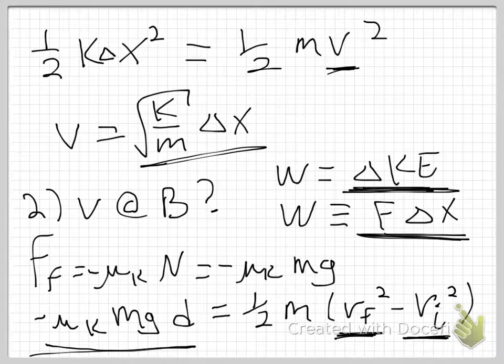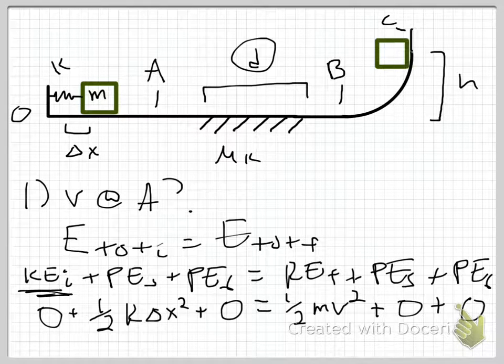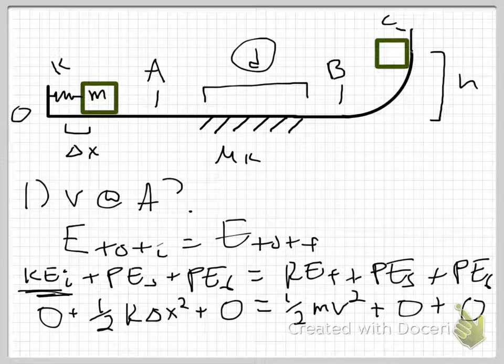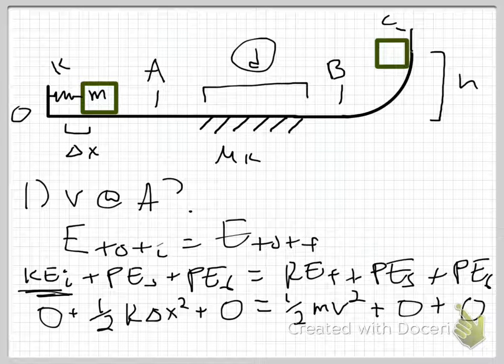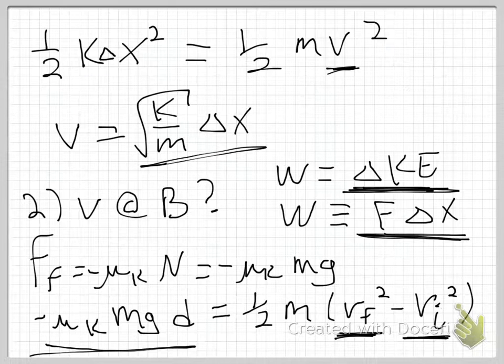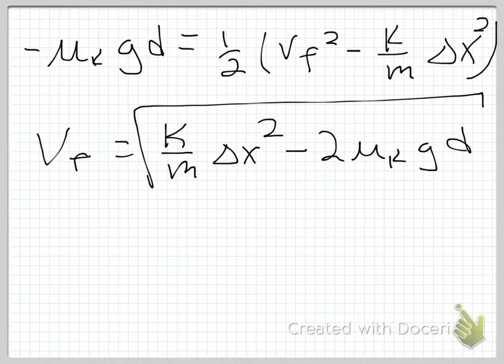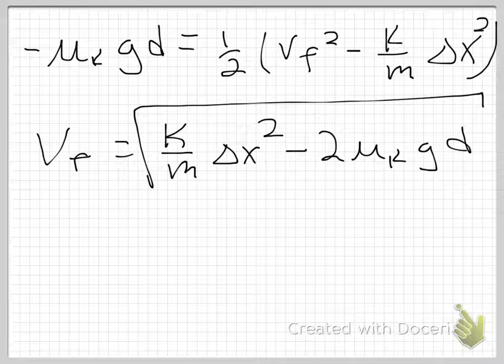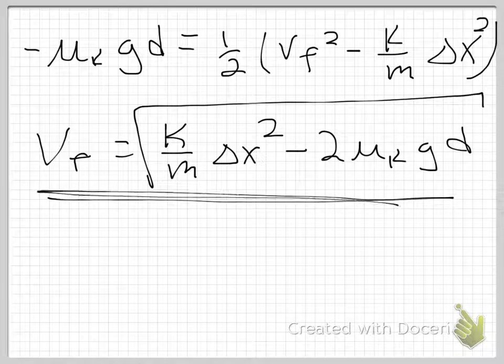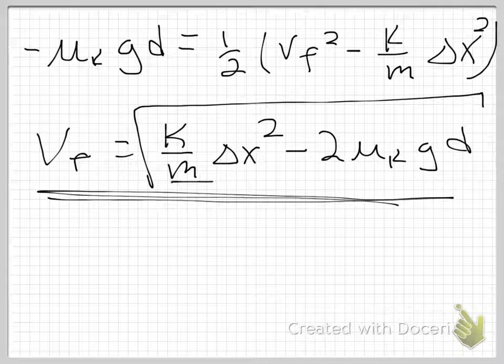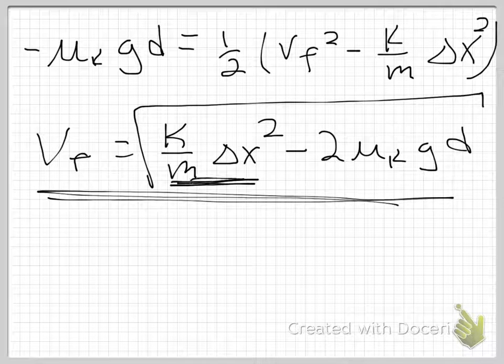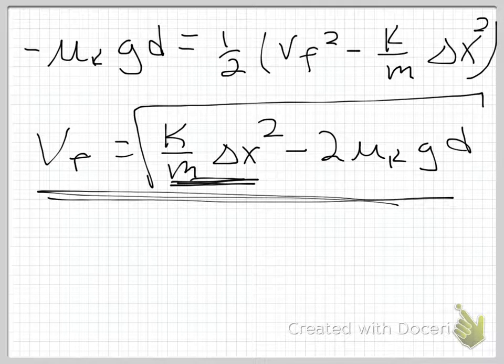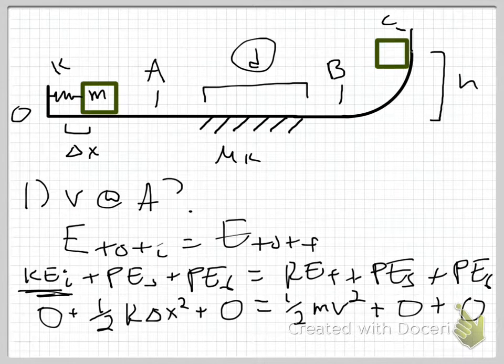So what we've done so far is we have looked at this problem, and I found the speed of this crate that was initially compressing a spring at point A, and now I've found it at point B. And what that looks like is this expression here. It's not pretty, but here you have it. This is the expression, and remember this part of the equation came from my v initial, which was the v I found at point A.